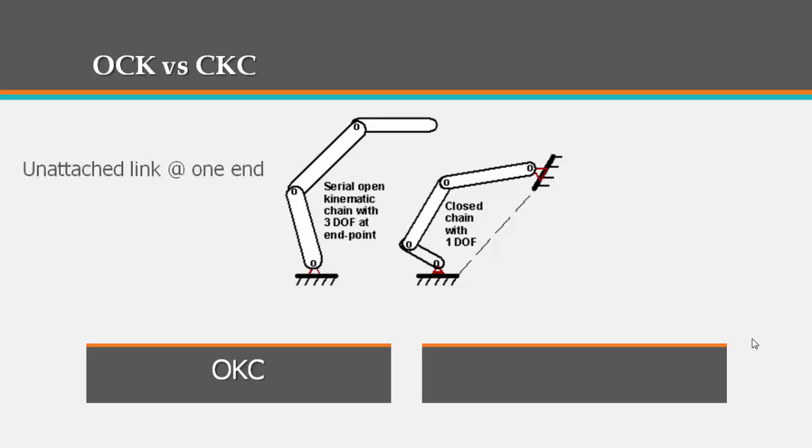An open kinematic chain occurs when there is an unattached link at the end of the serial chain. And in this case, the number of degrees of freedom is generally equal to the number of joint coordinates.